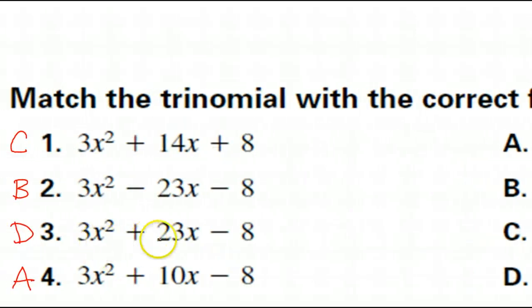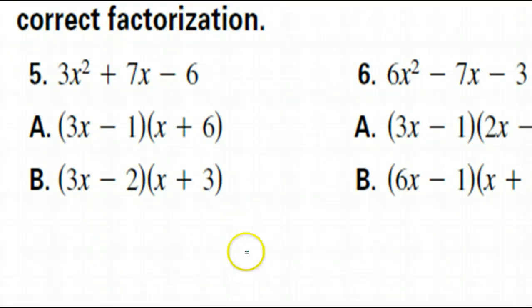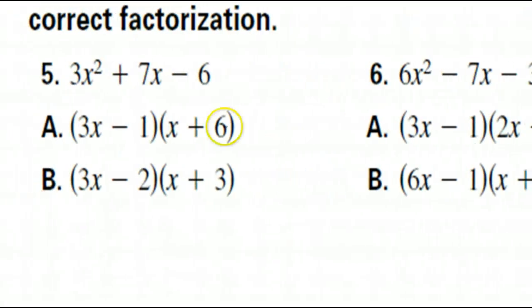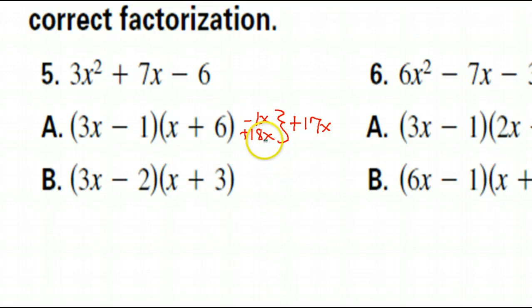Same thing again — inner plus outer equals middle. Inner I have negative 1x, outer I have positive 18x — together that makes positive 17x. But I'm supposed to get 7, so A is not the answer. The answer must be B. Let's check: inner negative 2x, outer 9x — put together, positive 7x, just like we wanted. So yes, B was the right answer.